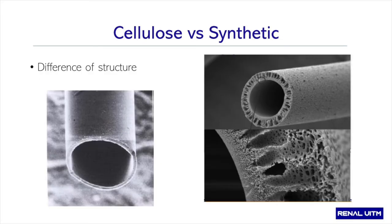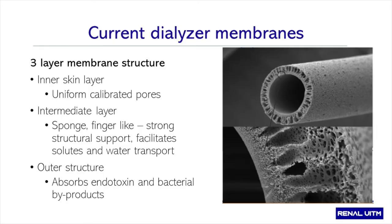These hollow fibers are micro-thin tubules with semi-porous walls, and these pores allow water and solutes to flow freely through their fibrous walls. This shows the difference in structure between cellulose hollow fibers versus the synthetic ones — usually made of polysulfone or polyamide. You can see the obvious architectural difference. Current dialyzer membranes basically have three layers or structures, designed to increase efficiency of solute clearance as well as ultrafiltration capabilities.